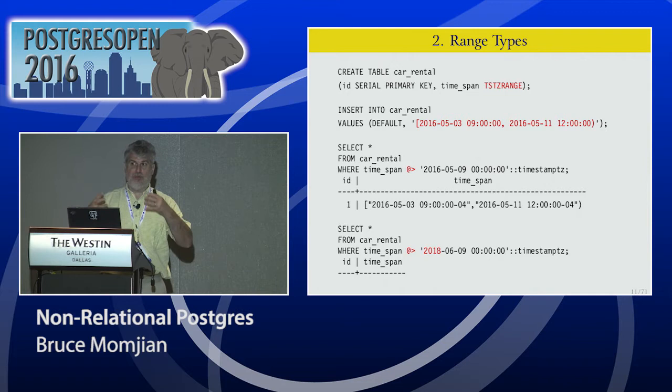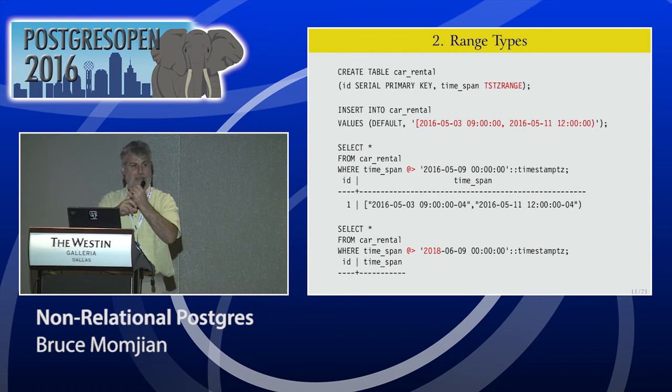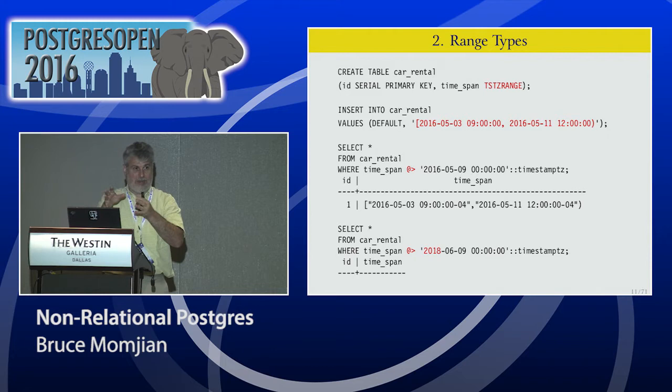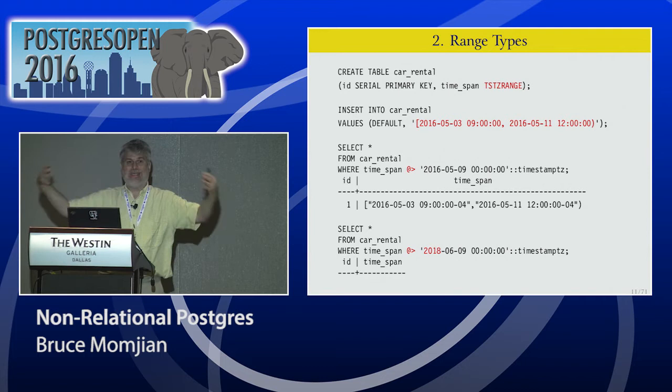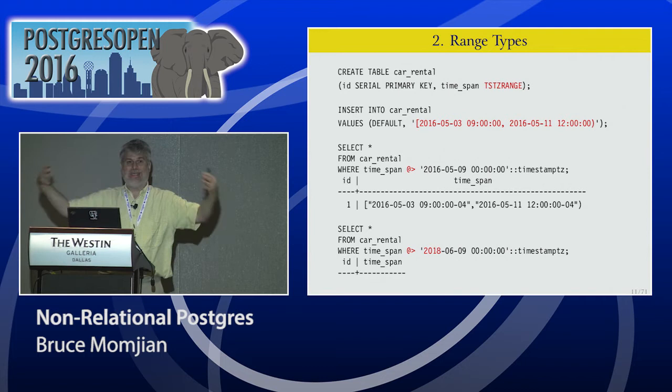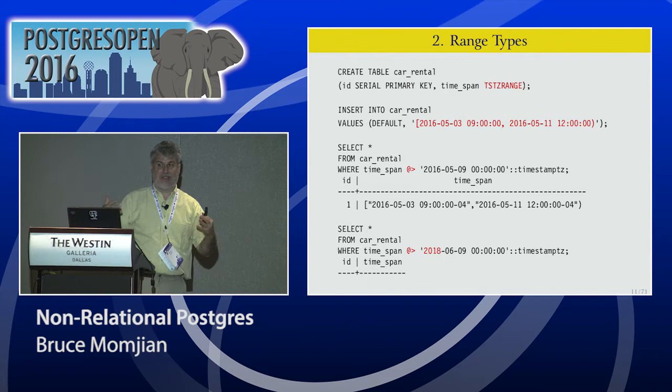Normally you would atomize this — you'd have a column for start and a separate column for stop. The problem with separate start and stop columns is: A, your queries are very complicated; B, the optimizer can't make a whole lot of use of it, because 'start greater than this AND stop greater than that' is hard to optimize; and third, it's very hard to index, because you have one index on start and one on stop, and they really can't work together. One of the exciting things I'll show you later is you can actually use indexing on this range type, which is really cool.